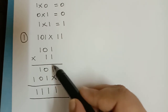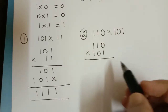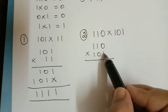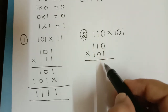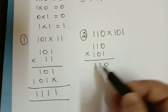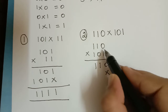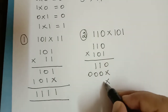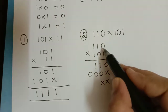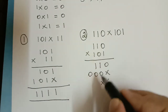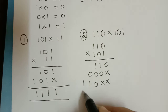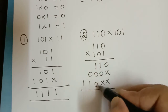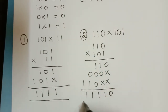We have already seen the addition of binary numbers, so using those rules we are adding these numbers. Now we shall see the multiplication of these 2 binary numbers. This 1 is multiplied with all 3 digits giving 0,1,1. Then 0 is multiplied with the 3 digits giving 3 zeros. After that, this 1 is multiplied giving 0,1,1. Adding all these: 0, 1 plus 0 is 1, 1, and 1 and 1. So this is the answer.